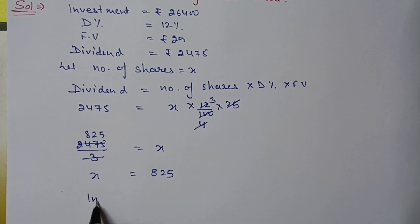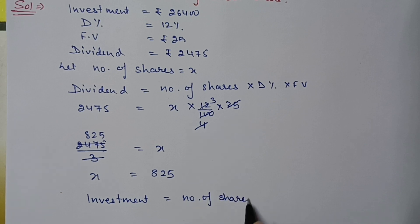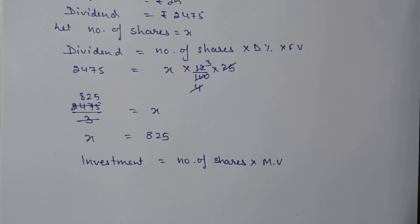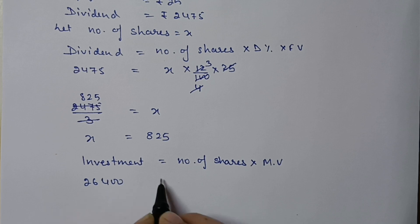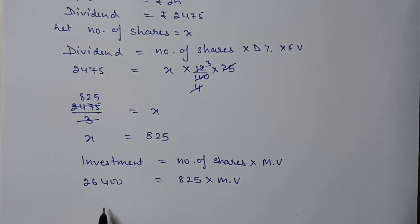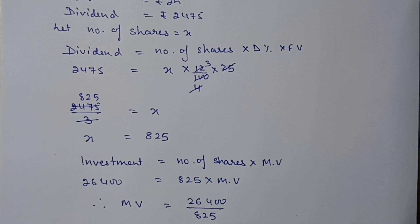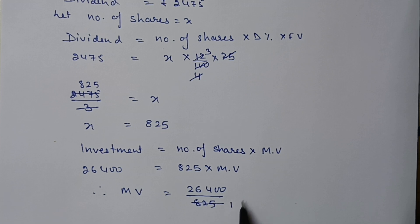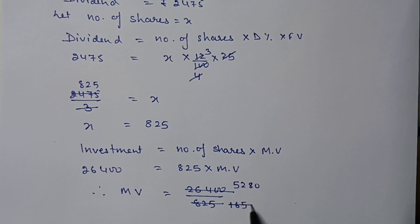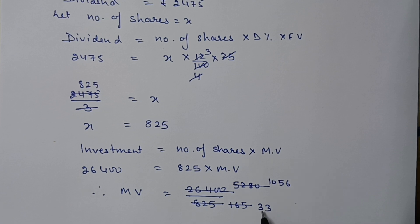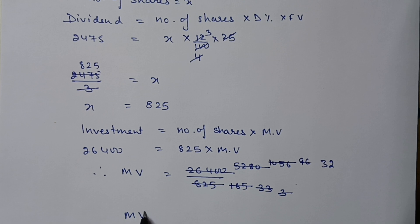Now we calculate the market value. Investment equals number of shares multiplied by market value. Substituting: 26,400 = 825 × market value. Market value equals 26,400 divided by 825. After cancellation using the 5 table, then the 11 table, we get the market value of one share as 32 rupees.